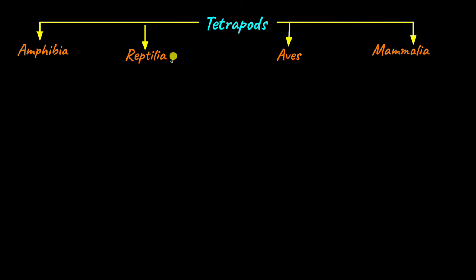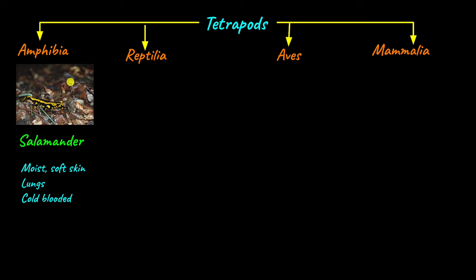Tetrapods are mainly terrestrial organisms, though there are a few exceptions. There are four main classes of Tetrapods: Amphibia, Reptilia, Aves, and Mammalia. Amphibia includes all amphibians like salamanders and frogs. They can live in both water and on land. They have a soft, moist skin that is not covered with scales. They can breathe through their skin, but they also have lungs. They are cold-blooded animals.